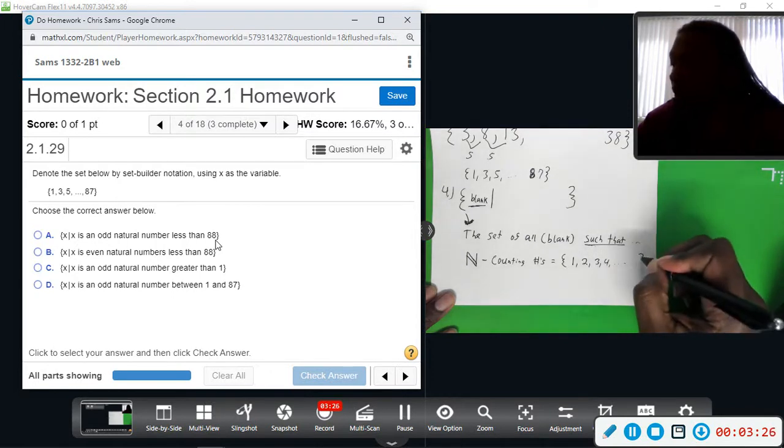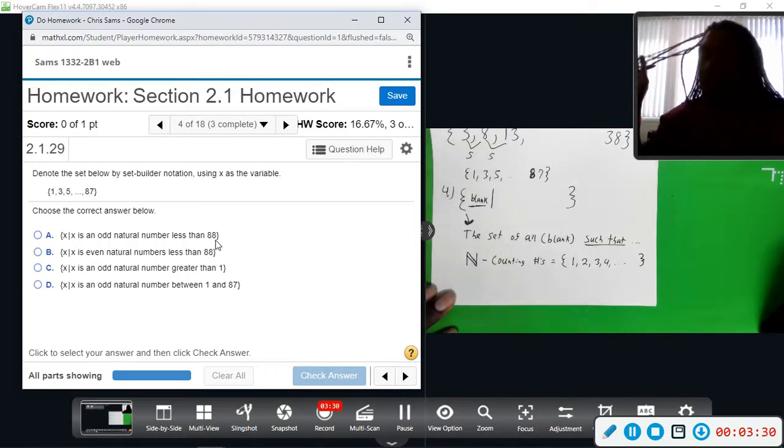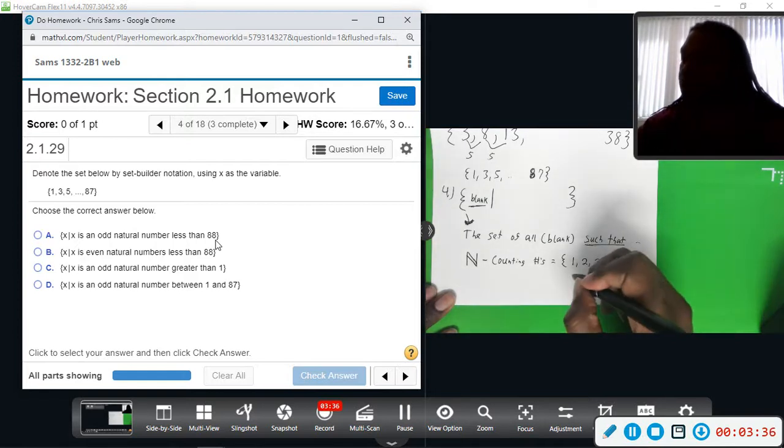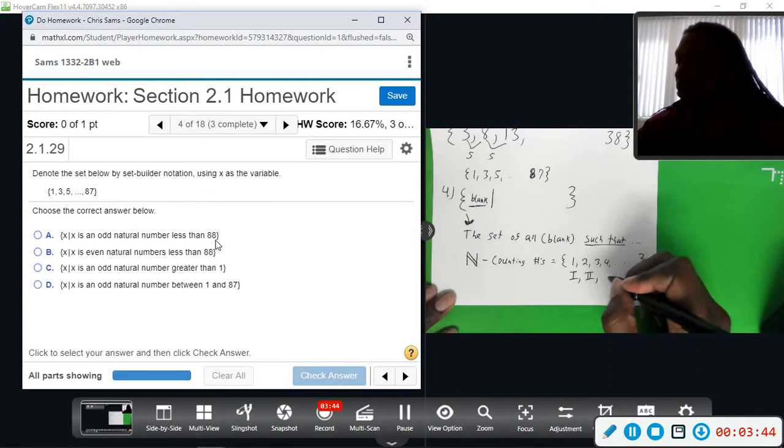Dot dot dot just means continuing. Natural numbers do not contain zero. There's a set of natural numbers that you use in English, which we refer to as Roman numerals - they do not have a zero. So that's an example of a set of natural numbers.